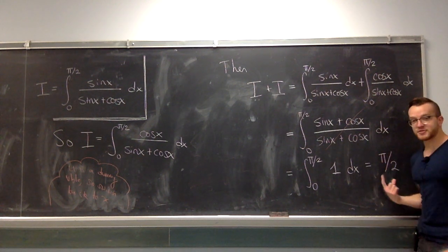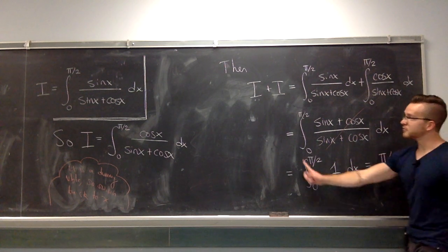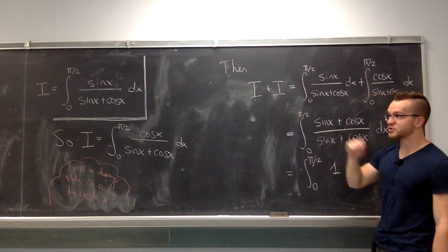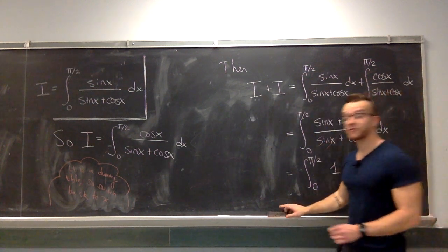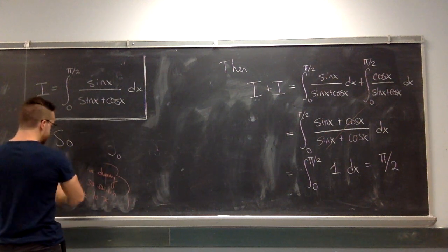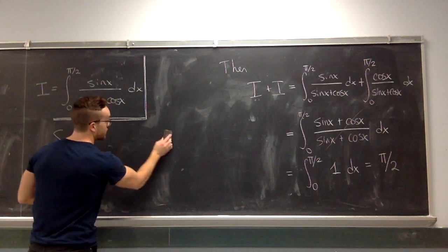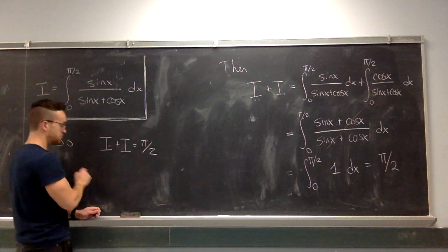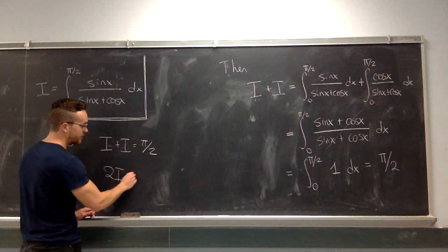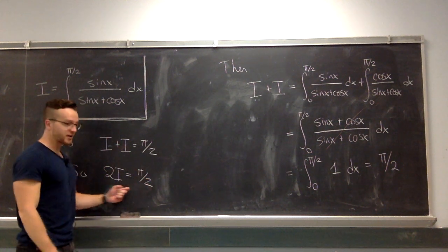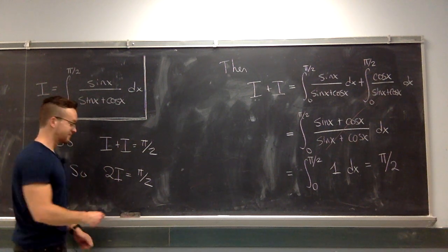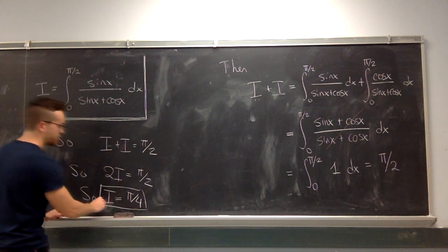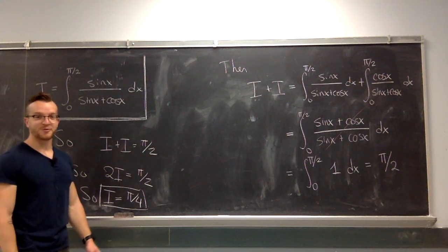Now, π/2 is not the answer because what does this thing equal? Follow the equalities back. It equals I plus I, which is not what we were trying to find. We were just trying to find I. But let me rephrase what we've shown. In conclusion, I plus I is π/2. But I plus I is just 2I. So two times I is π/2. Solve for I and we're done. This integral is π/4. Pretty nice.